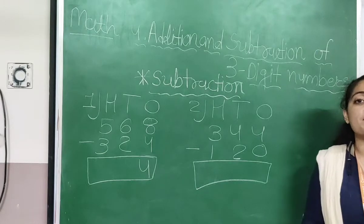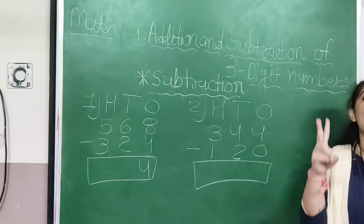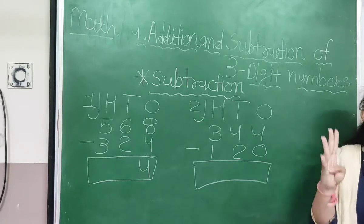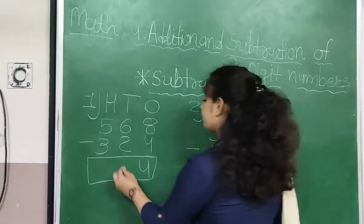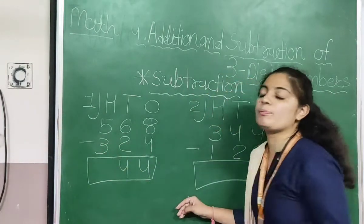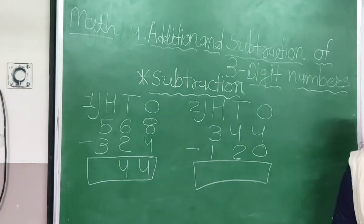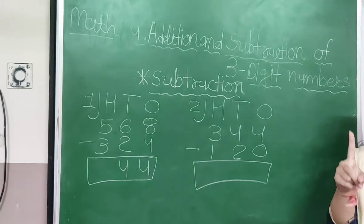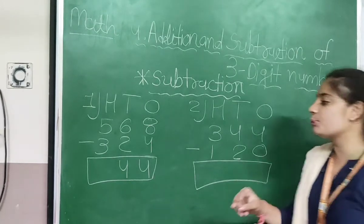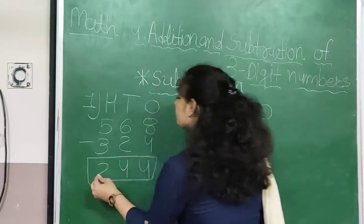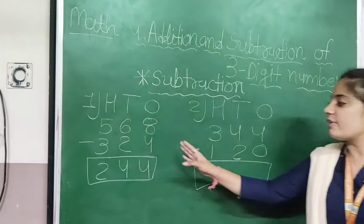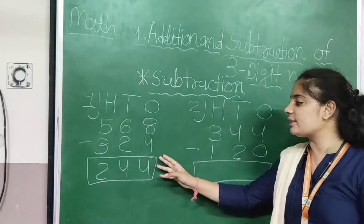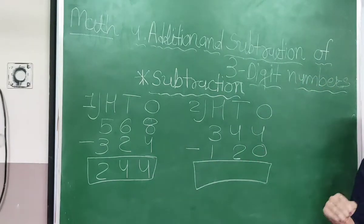6 minus 2 — count from 2 until you reach 6: 3, 4, 5, 6. So 6 minus 2, the answer will be 4. 5 minus 3 — count from 3 until you reach 5: 4, 5. The answer is 2. So 568 minus 324 is equal to 244.